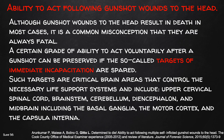An important topic is the ability to act following a gunshot wound to the head. Although a gunshot wound to the head results in death in most cases, it is a common misconception that they are always fatal. A certain degree of ability to act can be preserved if the targets of immediate incapacitation are spared — these are critical brain areas including the upper cervical spinal cord, brainstem, cerebellum, diencephalon, midbrain, basal ganglia, motor cortex, and internal capsule.